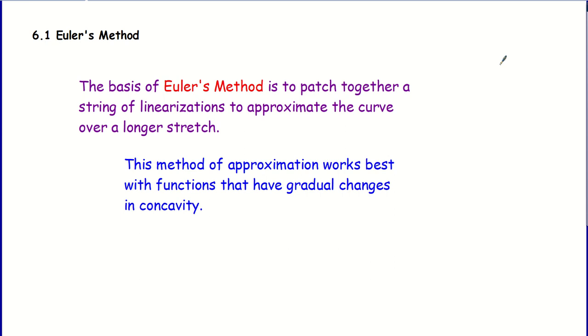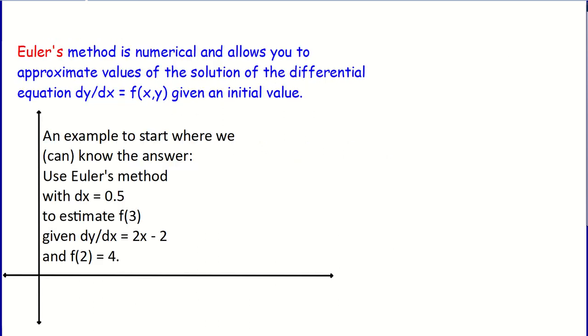The basis of Euler's method is to patch together a string of linearizations to approximate a curve over a longer stretch. A linearization is a tangent line approximation. This method works best if you have a function that will gradually change in concavity. It's a numerical method, which means we're computing it tabularly with a table of values. It allows us to approximate values if we have a differential equation and an initial value. Even if I can't solve the differential equation outright, I can still get an approximate value.